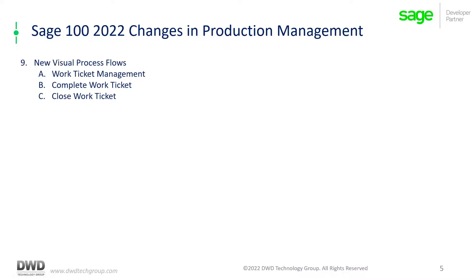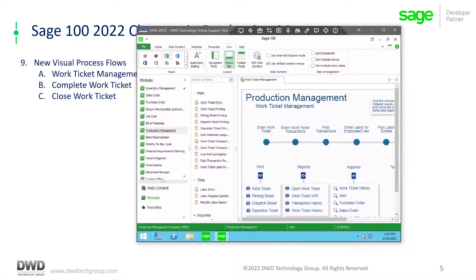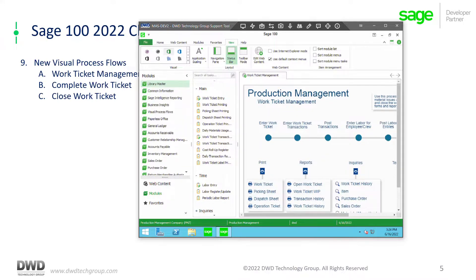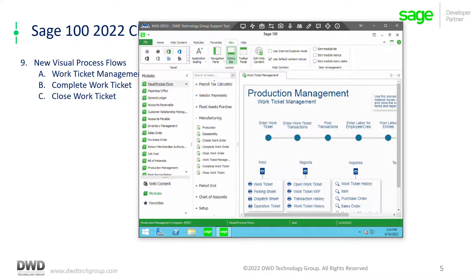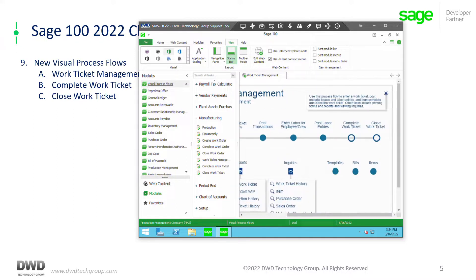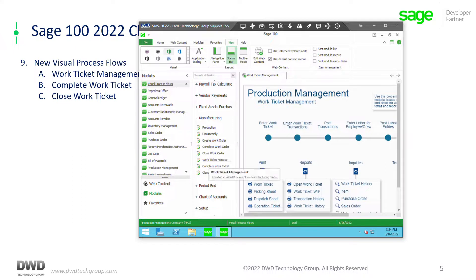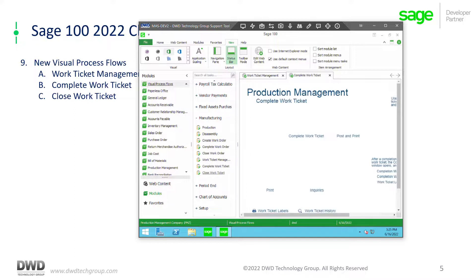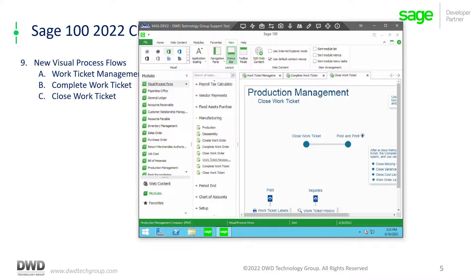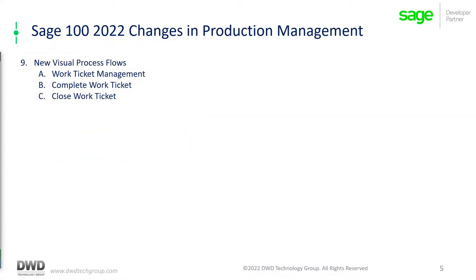In an effort to give users the Sage 100 experience, they have added new visual process flows. Let's go take a look at some of the ones they have added. If we go to visual process flows, you can see the work ticket management process flow is showing. What they actually added was the work ticket management process flow, the complete work ticket process flow, and the closed work ticket process flow — these were not available in versions prior to 2022.